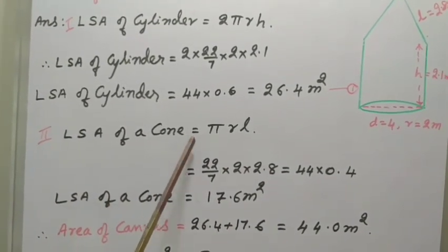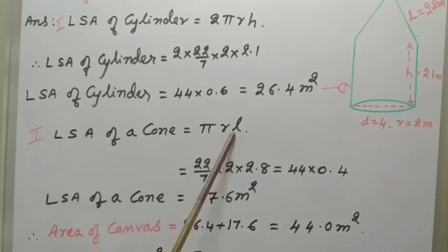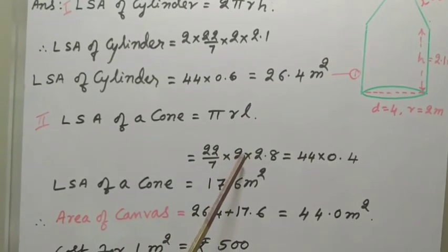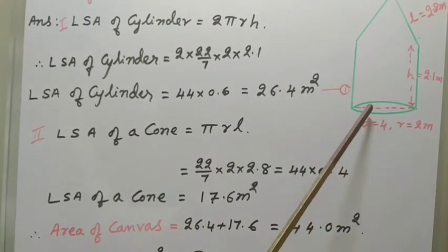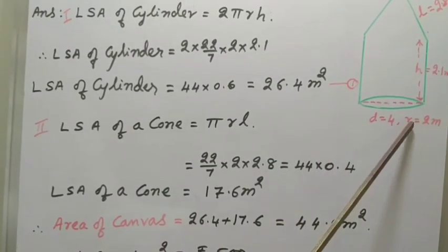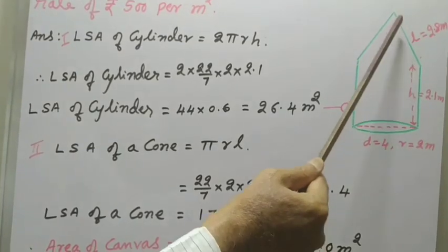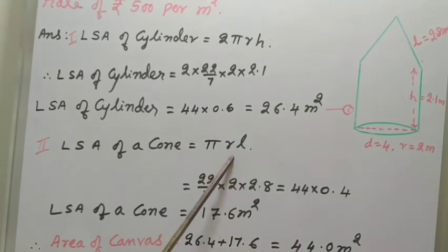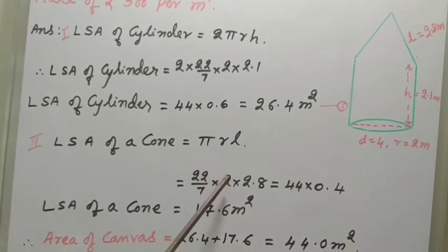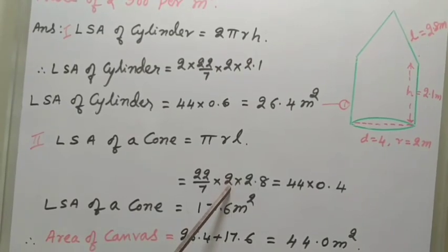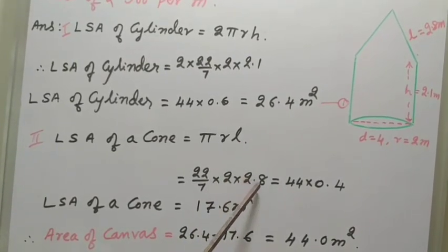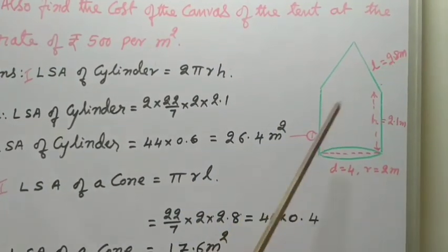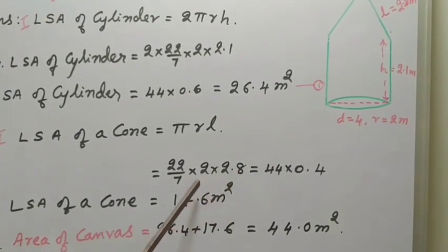Second part, LSA of cone. The formula is πRL. Pi means 22 over 7. Radius equal to 2m. Dear students, remember, radius of the cylinder is given, the same is radius of the cone. For this also, radius is same. Therefore, we used that R equal to, R means radius of cone, that is also equal to cylinder, the 2 into L means 2.8. This is slant height, it is given. This is slant height, 2.8 meters.